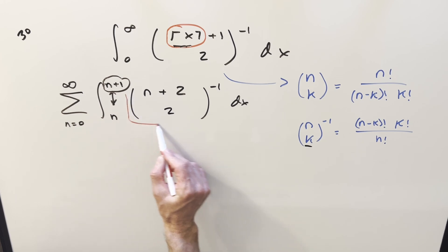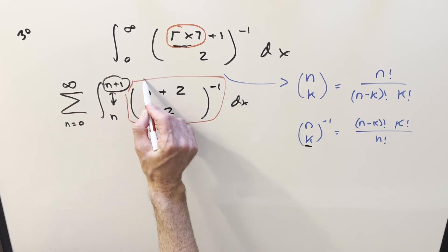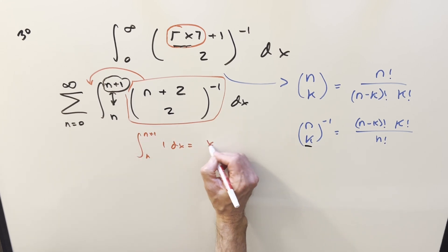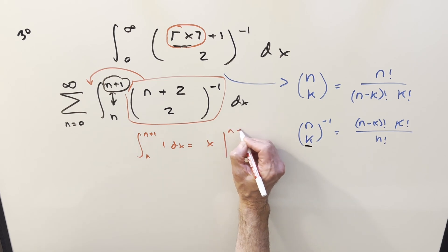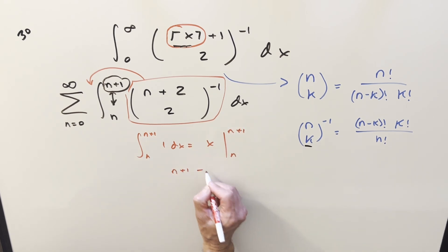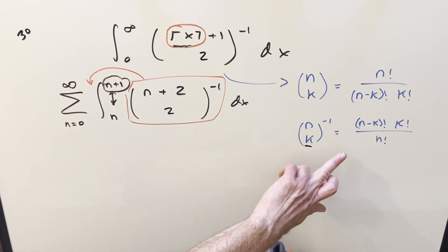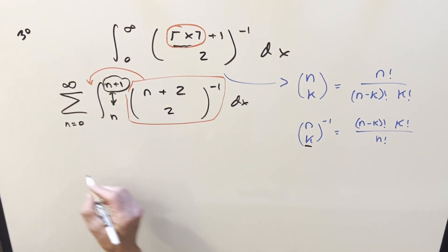But now this whole thing here, this is going to be a constant. So what we'll do is we'll take this outside of the integral. Then what's left to the integral we can just take care of really quick, because now we're just integrating one. So we get x evaluated from n to n plus one. When you evaluate this kind of thing, it always works out that it's just one. So what we can do is basically ignore the integral and just sum up this thing. So now I think at this point, let's convert it into factorials.